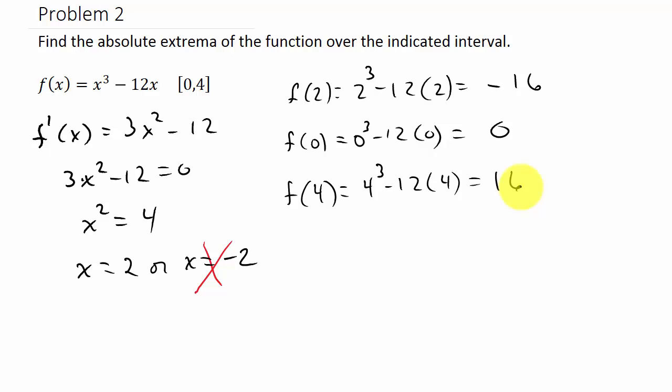So you can see the largest value is our absolute maximum, and the minimum value is our absolute minimum. So we have an absolute maximum at x equal 4. And the y value would be when you plug 4 into the original function. Well, we've already done that. So that would be 16.